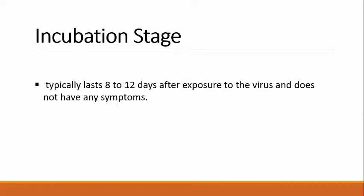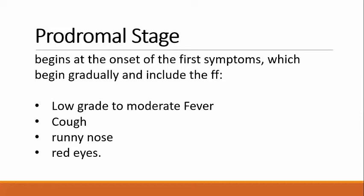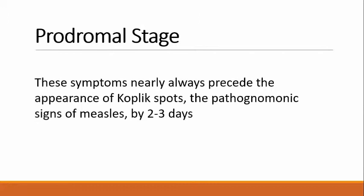Prodromal stage: It usually begins at the onset of the first symptoms, which begin gradually and include low-grade to moderate fever, cough, runny nose, and red eyes. These symptoms nearly always precede the appearance of Koplik spots, the pathognomonic sign of measles, by 2 to 3 days.